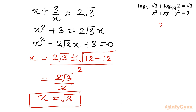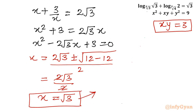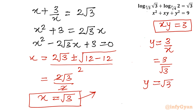Since x equals root 3 and xy equals 3, we find y equals 3 over x equals 3 over root 3. Writing 3 as root 3 times root 3, one root 3 cancels, giving y equals root 3. So the solution is x equals root 3 and y equals root 3.